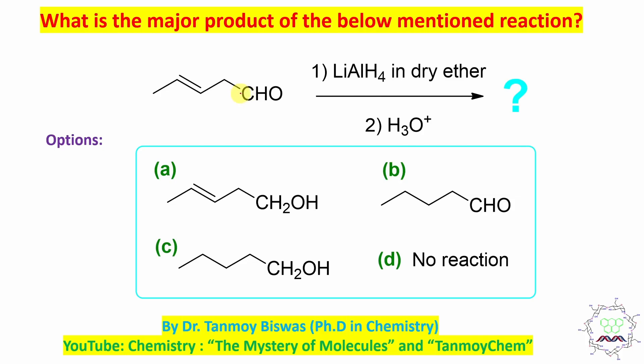I believe you have tried, so let's start. Here a question is given that this carbonyl derivative reacts with first lithium aluminum hydride, second dilute acid. What is the product? This is actually an easy question. When your lithium aluminum hydride is a nucleophilic hydride supplying agent, reaction with hydride results in alcohol.